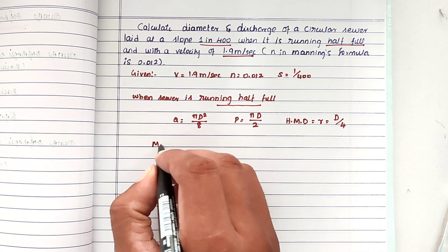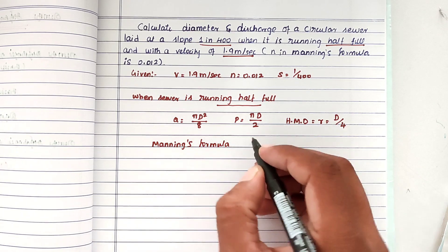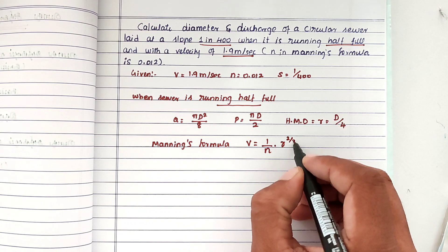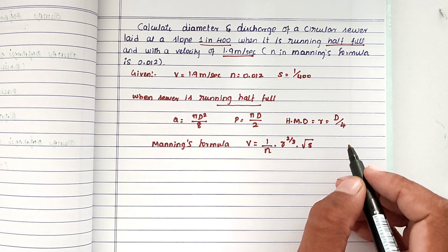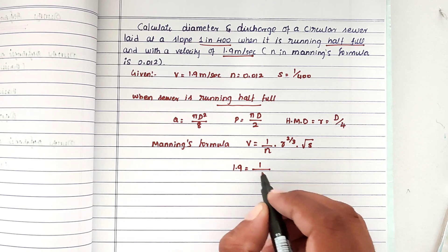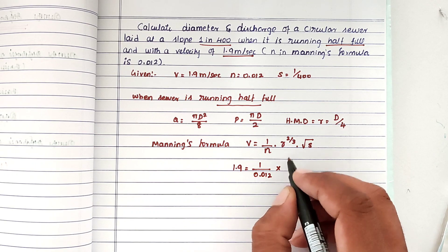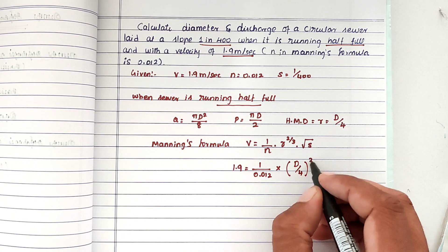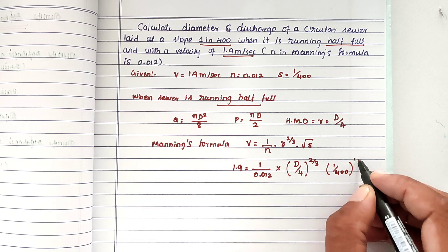Now applying Manning's formula: v = (1/n) · r^(2/3) · S^(1/2). Substituting the given values: 1.9 = (1/0.012) · (d/4)^(2/3) · (1/400)^(1/2). The only unknown here is d.